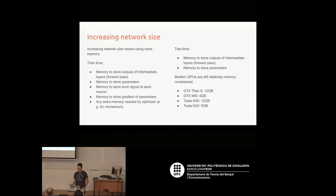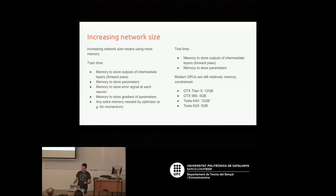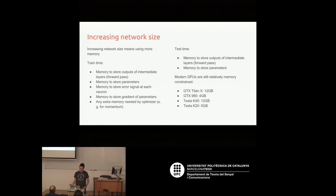Modern GPUs are relatively memory-constrained compared to CPU-based machines. A GPU commonly used for deep learning is the GTX Titan X, which has 12 GB of RAM — considered large. The GTX 980, a high-end gaming card, has only 4 GB. Tesla cards have 12 and 5 GB respectively. So if you're training a big model, you need to keep a close eye on available memory.